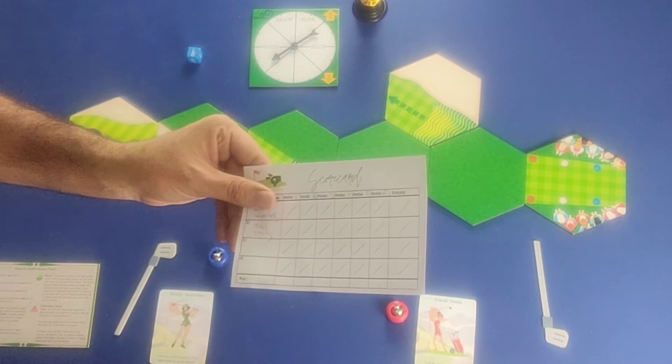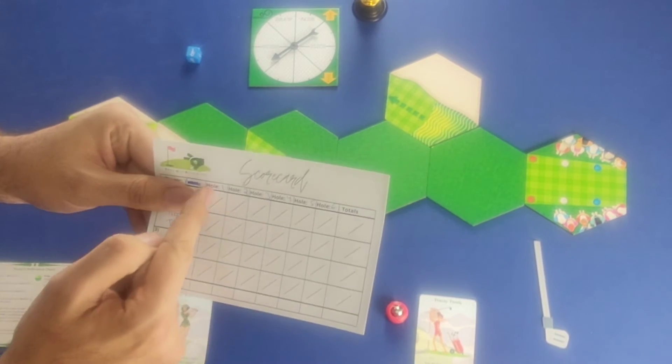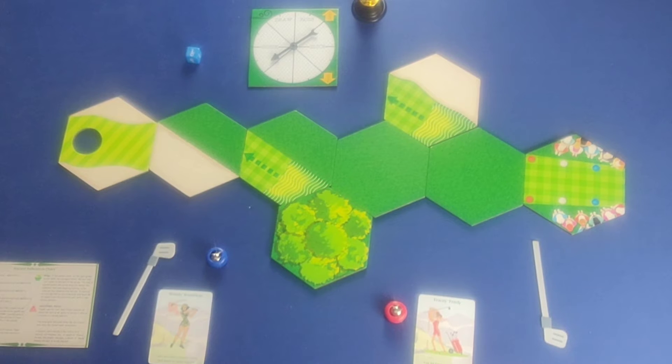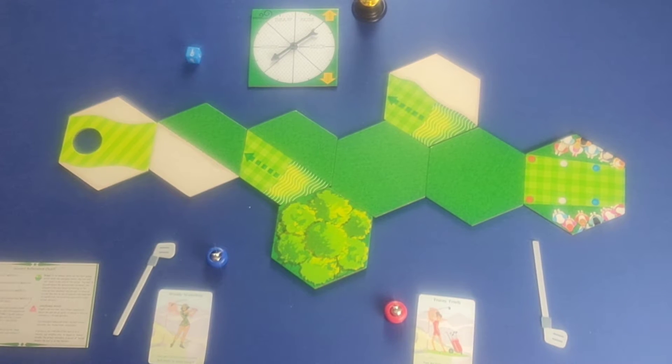Now we are going to have one of these scorecards, and we're going to list the name of all the players here and the number of holes that we'll be playing. Players at the beginning of the game are going to agree as to how many holes they're going to play. The rulebook recommends to play either three, six, nine, or 18 holes. For the purposes of this video, we'll be simulating a two-player game and six holes.